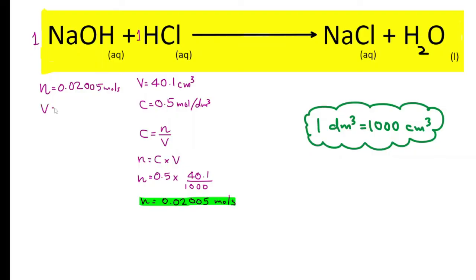But the volume of sodium hydroxide we used was 25 cubic centimeters, so let's divide by 1000 to get it into cubic decimeters. Now I know the volume, I know the number of moles. So finding the concentration of sodium hydroxide, which is our objective in this experiment, is really easy. C is equal to N over V. When you do the calculation you get 0.8 moles per cubic decimeter.